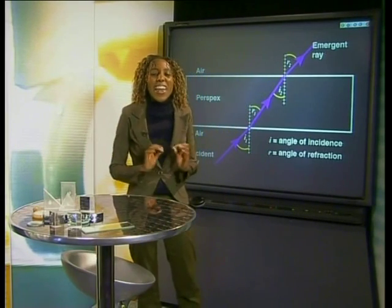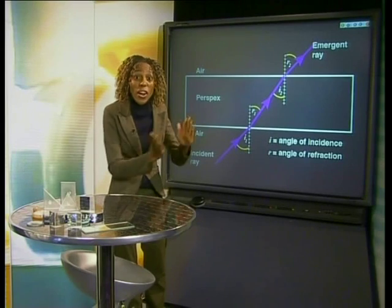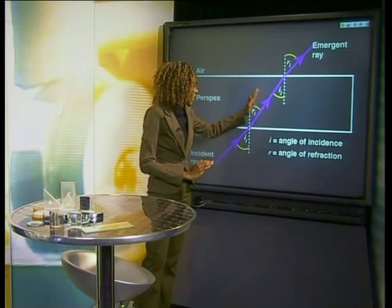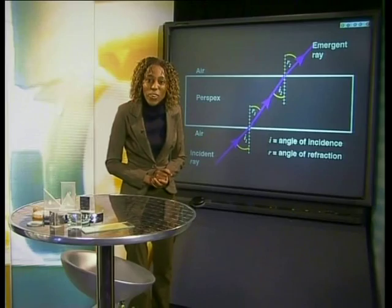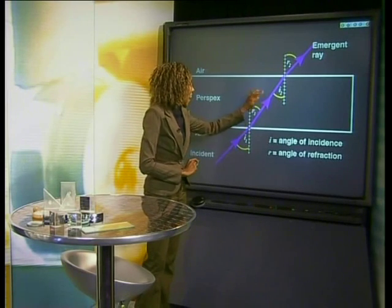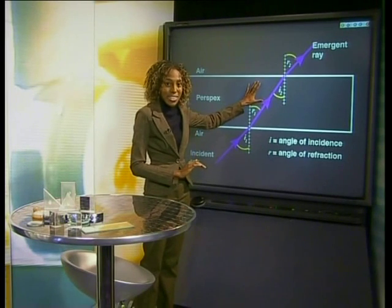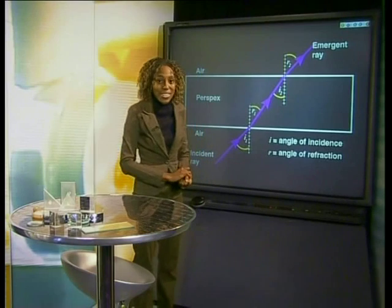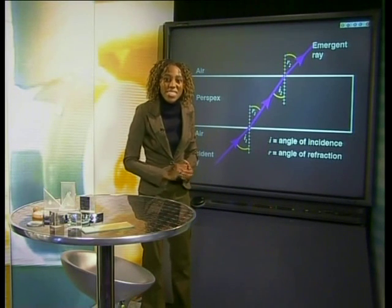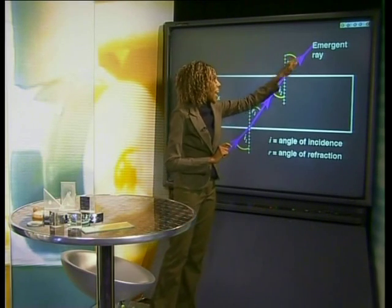When light moves from a low optical density to a high optical density, we know that the light will be refracted. The light is refracted in such a way that it moves closer to the normal because the light ray is slowing down. Here, the angle of incidence is larger than the angle of refraction. However, when light moves from a medium of high optical density to a medium of low optical density, the refracted ray moves away from the normal because light is speeding up. Here, the angle of incidence is smaller than the angle of refraction.